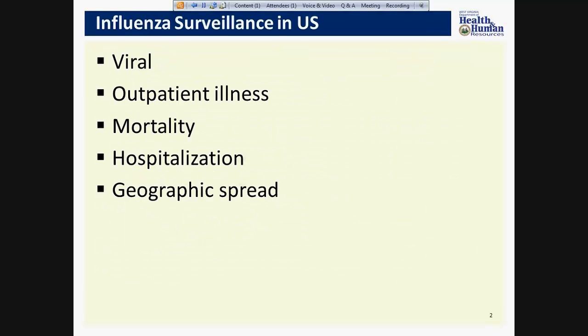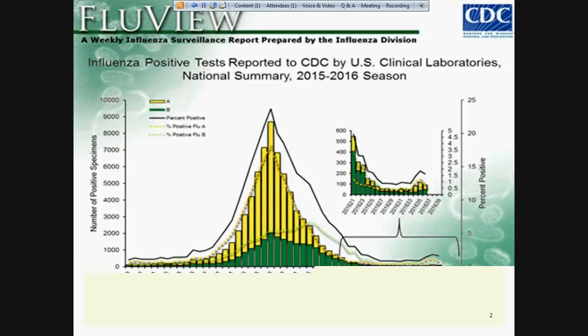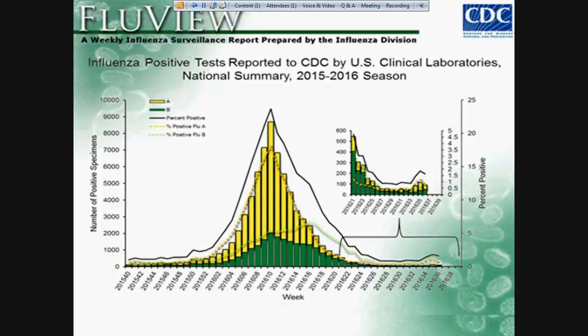I will start off today by describing the influenza surveillance program here in the United States. There are five major types of influenza surveillance. The data I'm about to show you can be accessed through our website. We have a link to the flu view from the CDC website. This first graph on slide 4 is of virologic surveillance for the 2015-2016 flu season. Virologic surveillance is laboratory testing surveillance using confirmatory testing methods by PCR or culture.